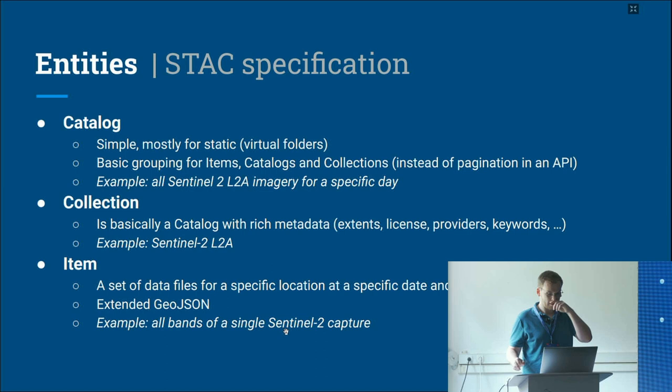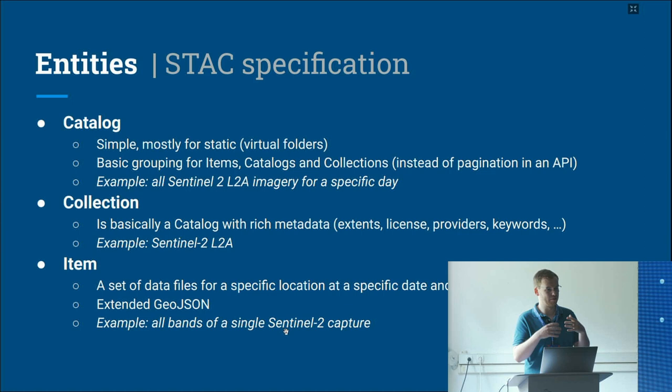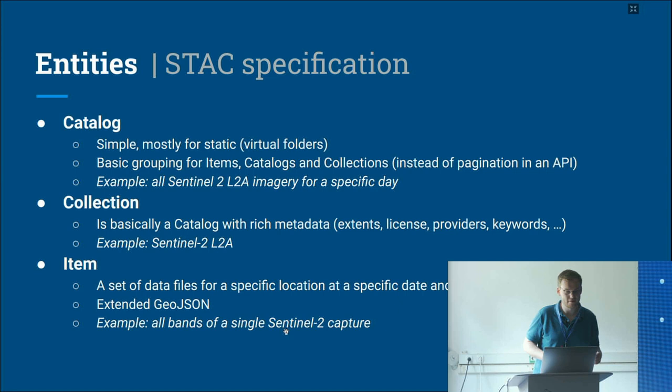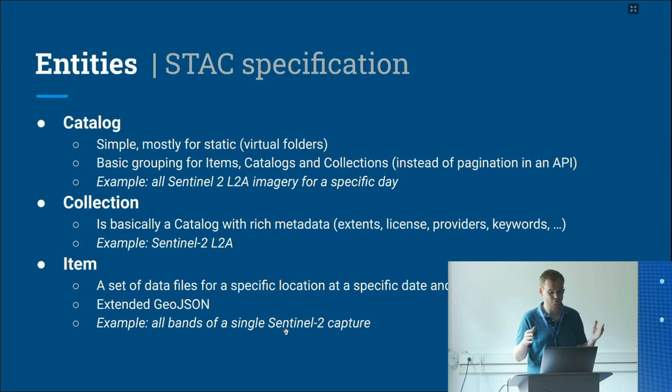There are a couple of different entities defined in the STAC specification. There is a catalogue, a collection, and an item. The catalogue is a simple structure to group different entities like a collection or an item together in a static structure. An example would be all Sentinel-2 Level 2A imagery for a specific day — you can group by different variants like years, days, months, etc.